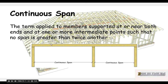A continuous span applies to members supported at or near both ends with one or more intermediate points, such that no span is greater than twice the other. So you can see that this member is continuous over one or more supports — that's a continuous span.